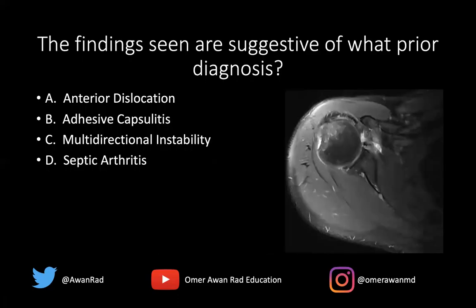Adhesive capsulitis is typically seen when you have obliteration of the fat within the rotator interval. So on a sagittal T1-weighted image, that space between the supraspinatus and subscapularis — the rotator interval, which normally has fat — that fat will be obliterated. You may also have thickening of the inferior glenohumeral ligament and thickening of the axillary recess. Those are all findings of adhesive capsulitis.